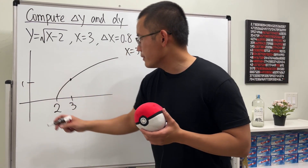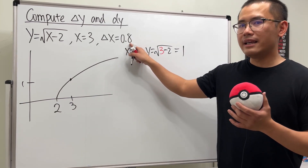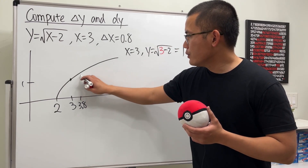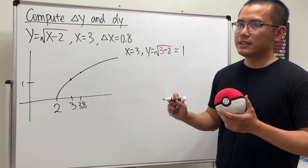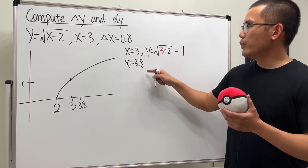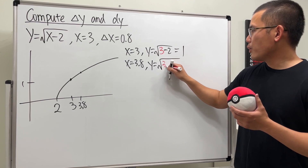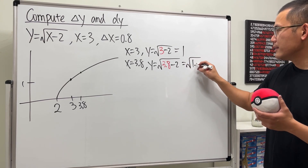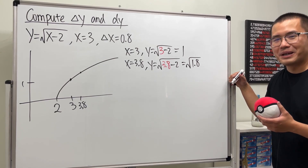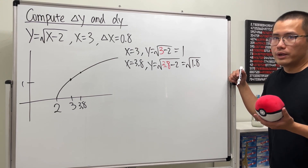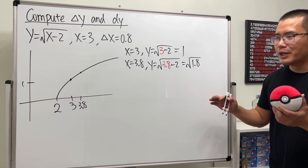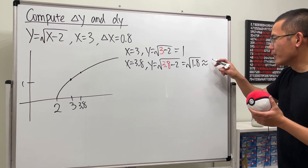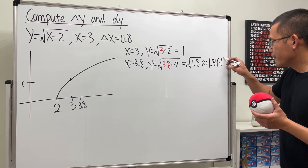We move to the right by 0.8 units, reaching x = 3.8. Looking up on the graph, that lands us somewhere around there. When x = 3.8, y = √(3.8 - 2) = √1.8, which is harder to compute. Using a calculator, this is approximately 1.3416.